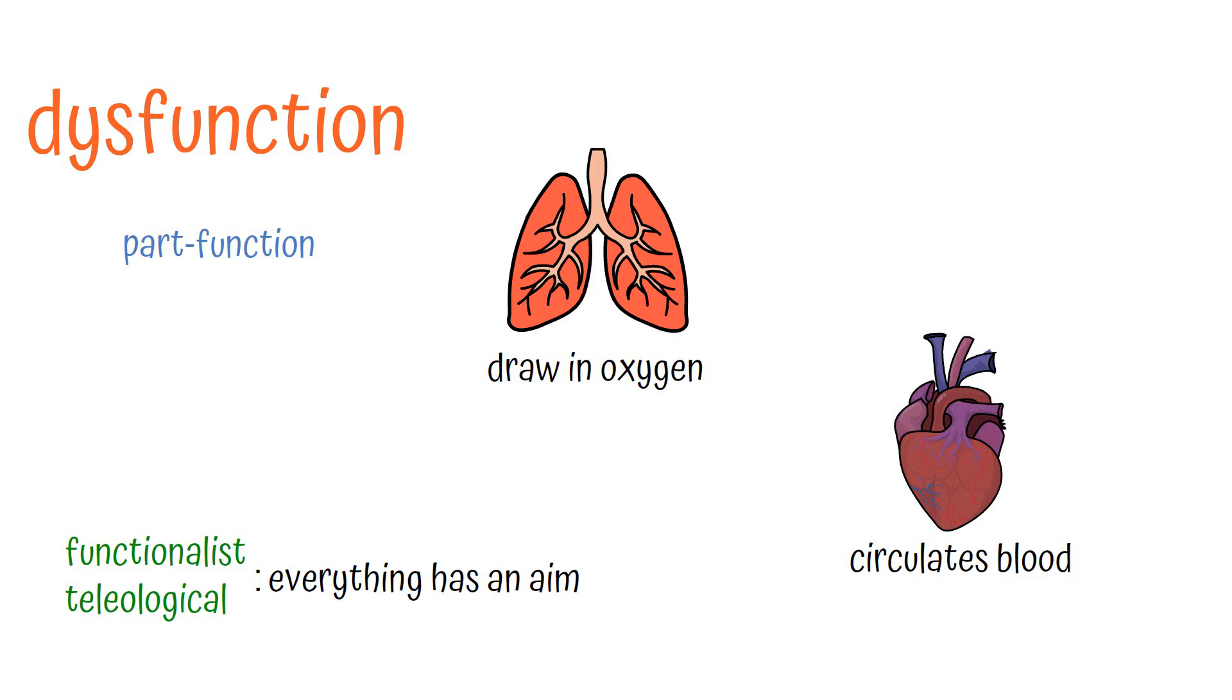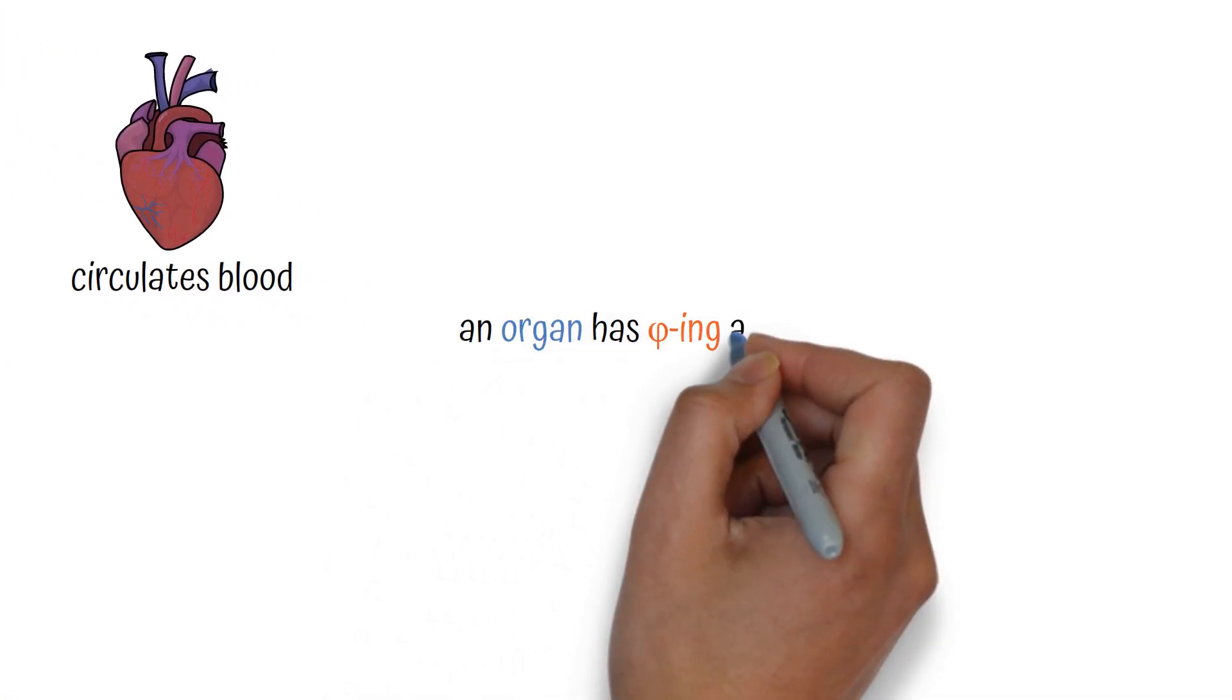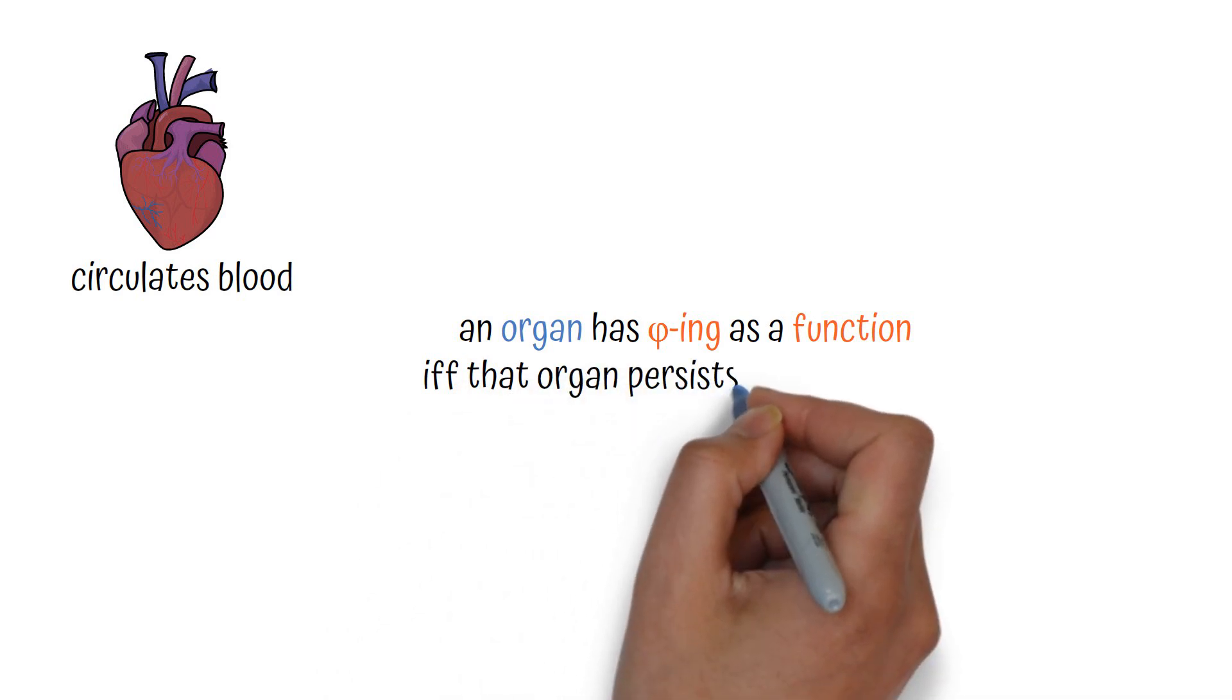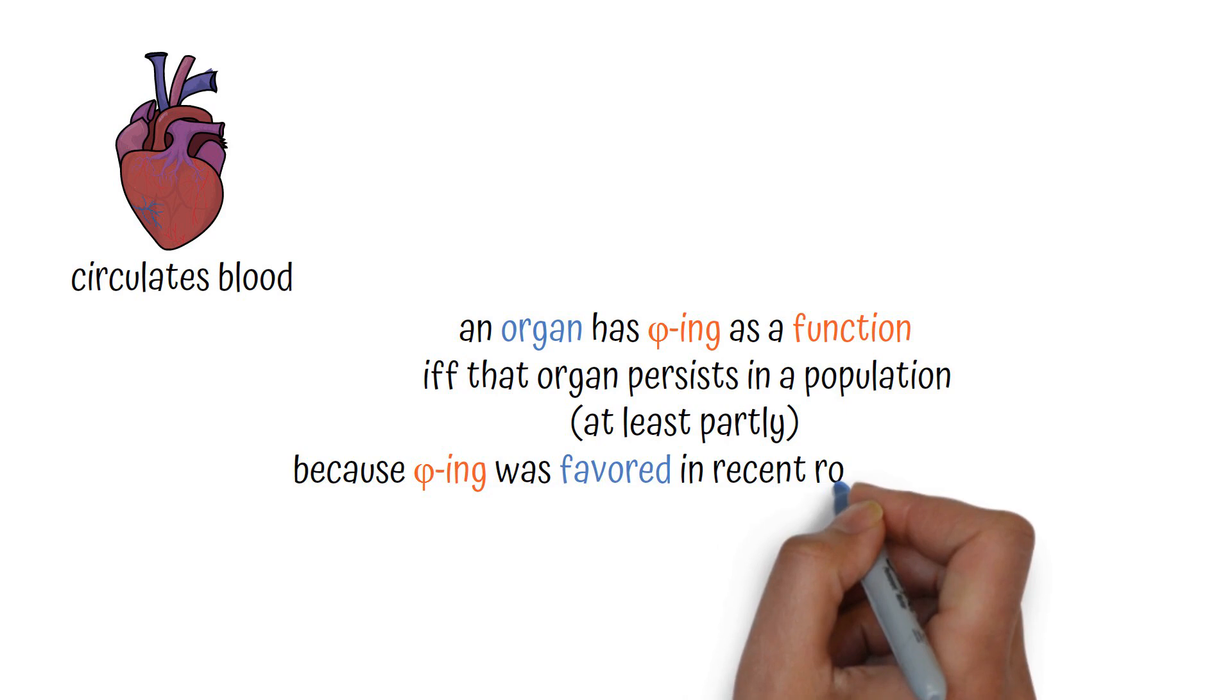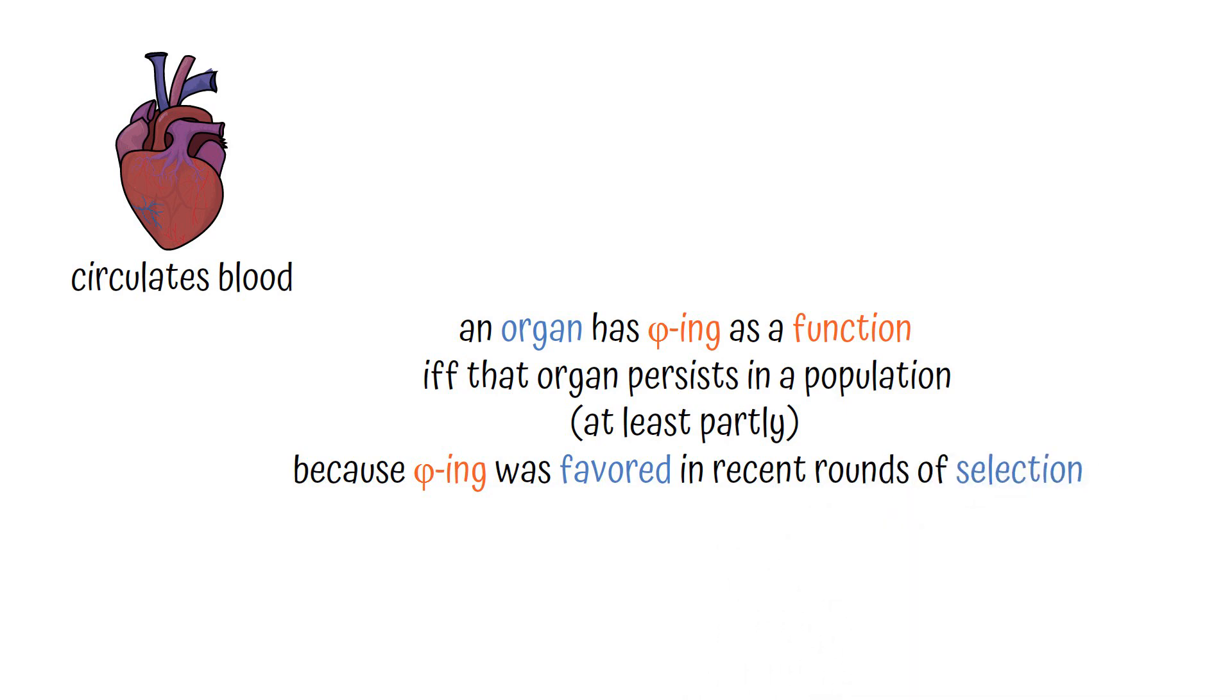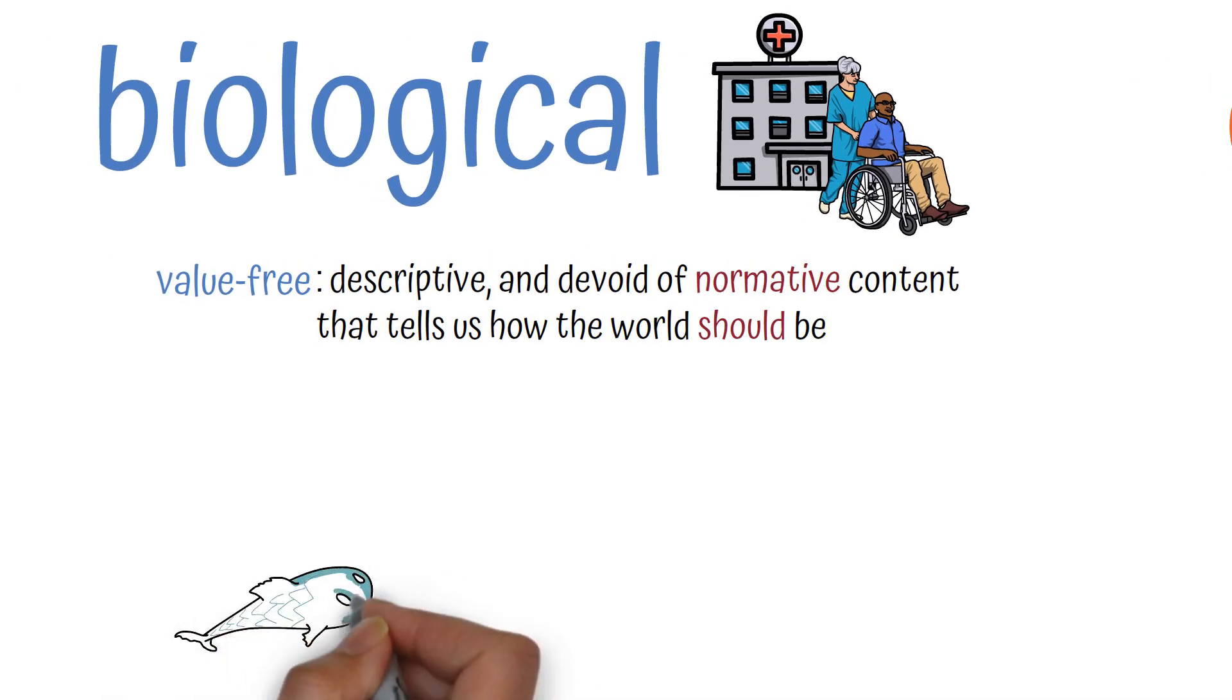As maligned as functionalism has been, Kuhn gives it a solid Darwinian spin. An organ has phi-ing as a function if and only if that organ persists in a population, at least partly because phi-ing was favored in recent rounds of selection. In other words, this isn't arbitrary or mere Aristotelianism or a medieval model that says hearts beat because they love God. True to form, this is a biological explanation of function.